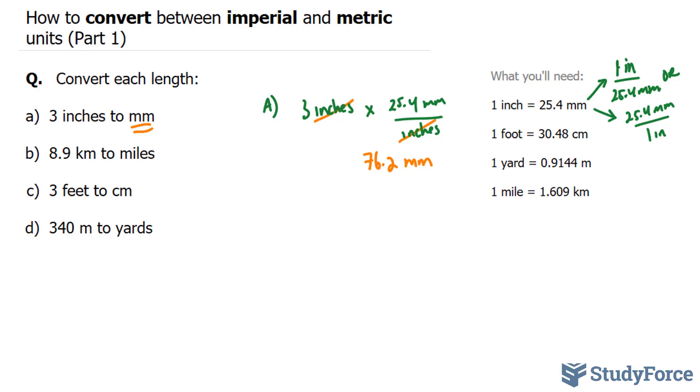Now we're going to replicate this method for all the other questions. Let's move on to B. In B, they want us to convert 8.9 kilometers, which is a metric unit, to miles. So I'm going to write down 8.9 kilometers. I'm going to look at my conversion ratio chart. You'll notice that over here, 1 mile is equal to approximately 1.609 kilometers.